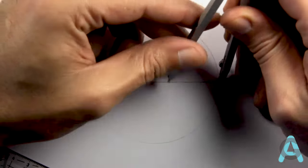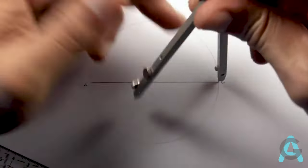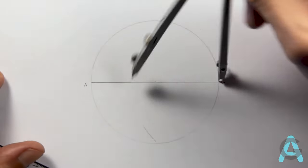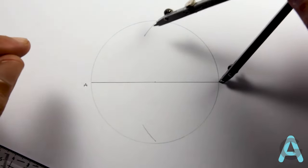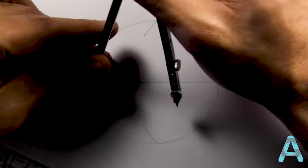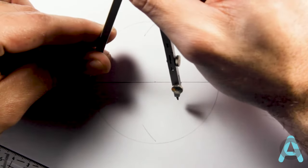For that, we'll open our compass more than half the length of the segment AC. And then, we'll do two small arcs slightly in the direction of the center of the diameter.